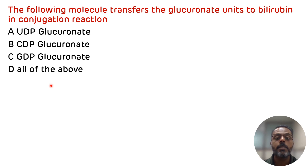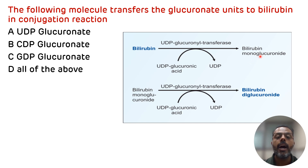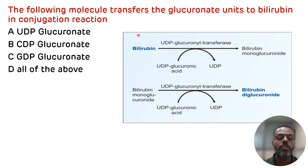We all know that bilirubin, when it is synthesized, is present in the unconjugated form — that is, water insoluble form. To make it water soluble, we need a conjugation reaction which happens in the liver, with the help of UDP glucuronic acid. UDP glucuronic acid first converts bilirubin into bilirubin monoglucuronate, and then this bilirubin monoglucuronate, again with the help of UDP glucuronic acid, is converted into bilirubin diglucuronate. This is how conjugation of bilirubin is done with the help of UDP glucuronate transferase enzyme. So the correct answer is UDP glucuronate, that is option A.